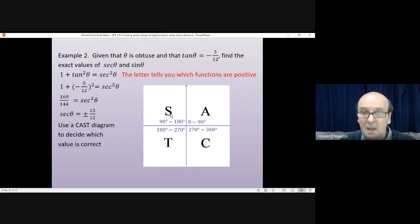1 over sine is cosec. So, cosec is positive. But that's it. Nothing else is. Everything else is negative, which means sec theta, which is 1 over cos, that must be negative if theta is an obtuse angle between 90 and 180. So, at this point, we can discard the positive value and say it can't be that.